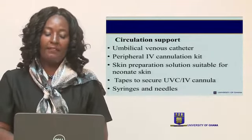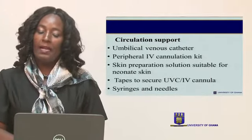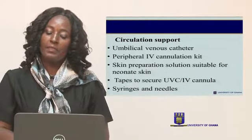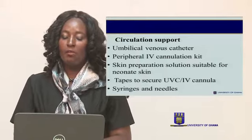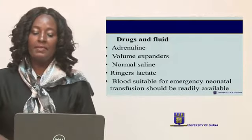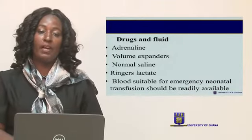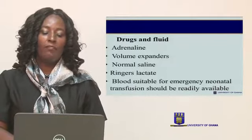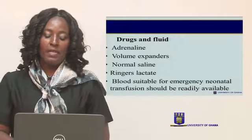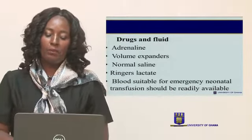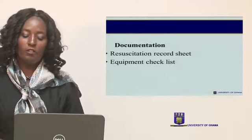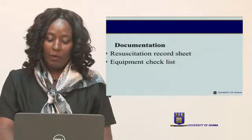For circulatory support, you need an umbilical venous catheter, IV kits to pass an IV line, sterile water or methylated spirit for cleaning, and syringes and needles. Drugs that may be needed include adrenaline if the heart rate is low, volume expanders such as normal saline and Ringer's lactate intravenously, and blood if transfusion is needed. Documentation and recording sheets are also necessary.